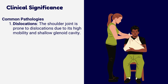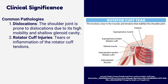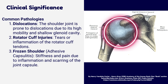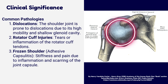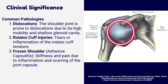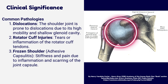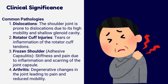Common pathologies of the shoulder joint include: dislocations — the shoulder joint is prone to dislocations due to its high mobility and shallow glenoid cavity; rotator cuff injuries — tears or inflammation of the rotator cuff tendons; frozen shoulder, also known as adhesive capsulitis — stiffness and pain due to inflammation and scarring of the joint capsule; and arthritis — degenerative changes in the joint leading to pain and reduced mobility.